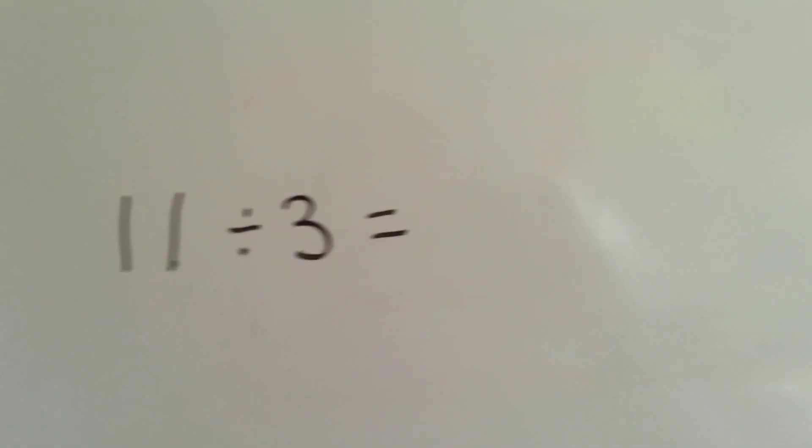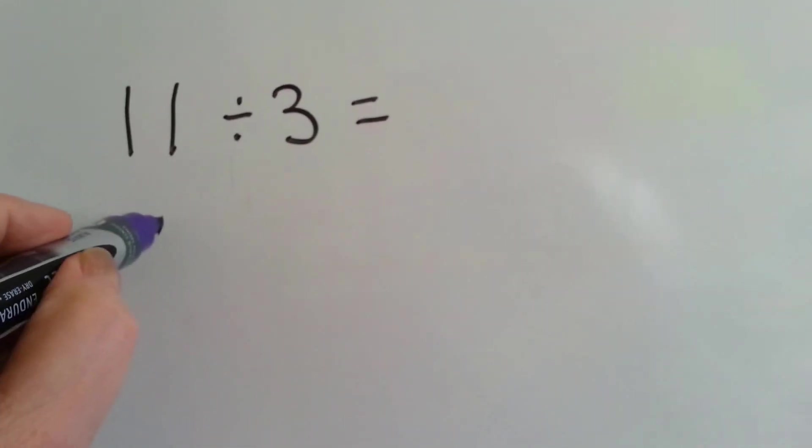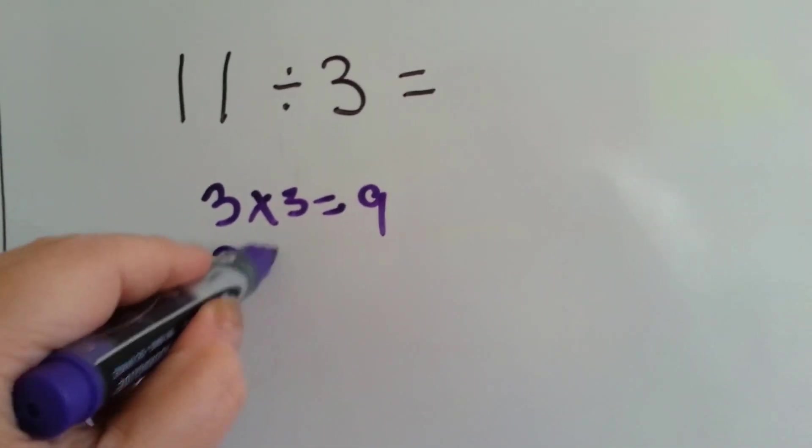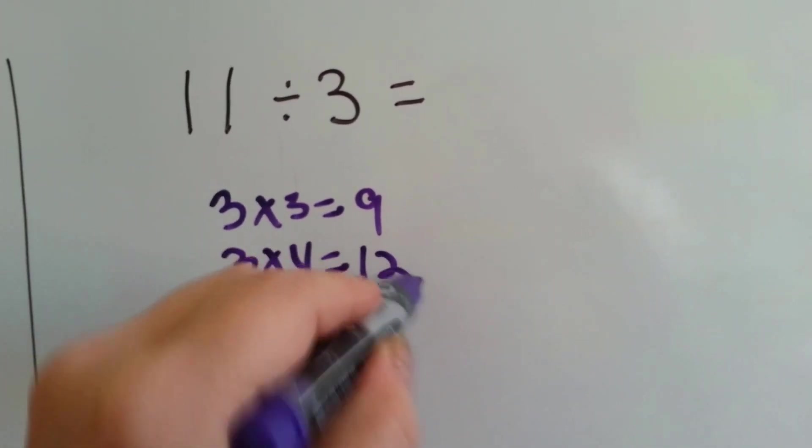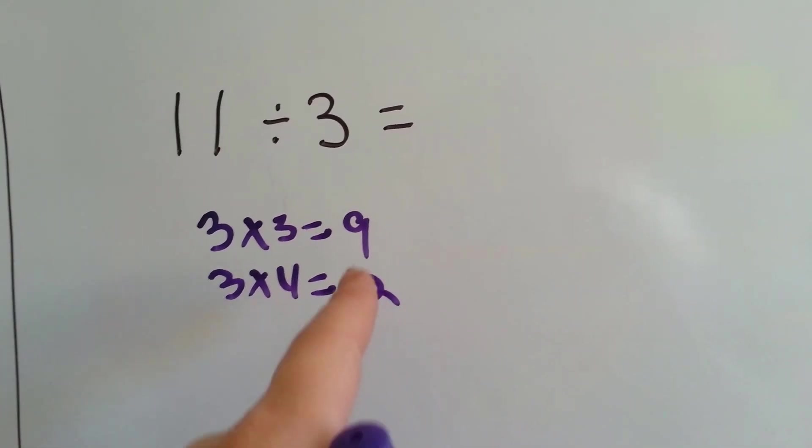We have 11 that we want to divide by 3. How many 3's fit into 11? 3 times 3 equals 9. 3 times 4 equals 12. Well, we can't go over. So the closest we can get is 9. So we've got a 3.